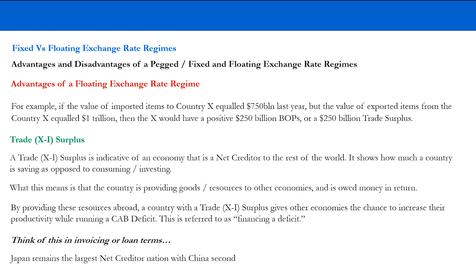By providing resources abroad, a country with a trade surplus gives other economies the chance to increase their productivity while running a current account balance deficit — this is what's referred to in macroeconomics as a country financing another country's deficit. Think of it in invoicing terms: if you run a company, you issue invoices and receive money for goods or services provided. A country running a trade surplus is essentially sending invoices to deficit countries and sending resources in return for money. In the modern world, Japan remains the largest net creditor nation, with China a close second.